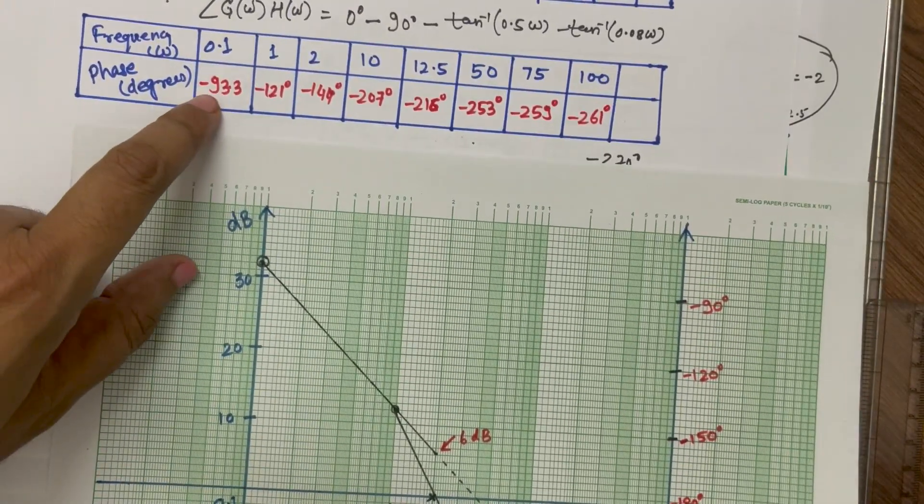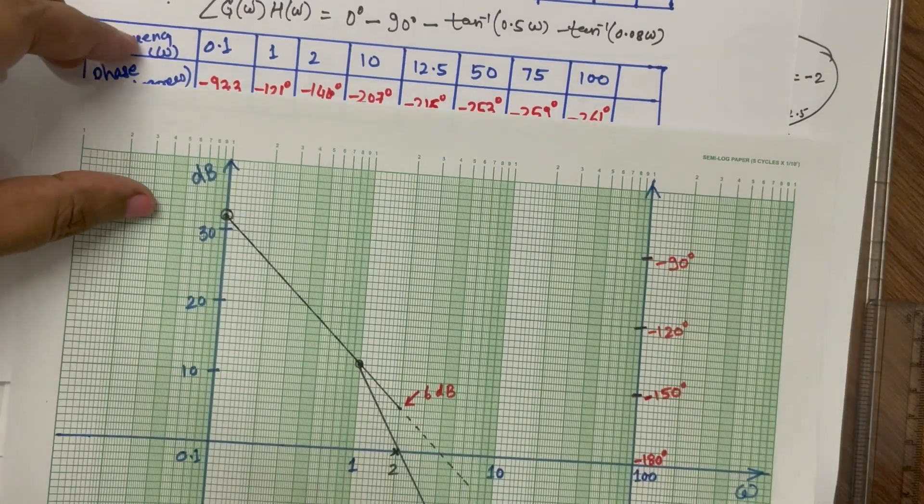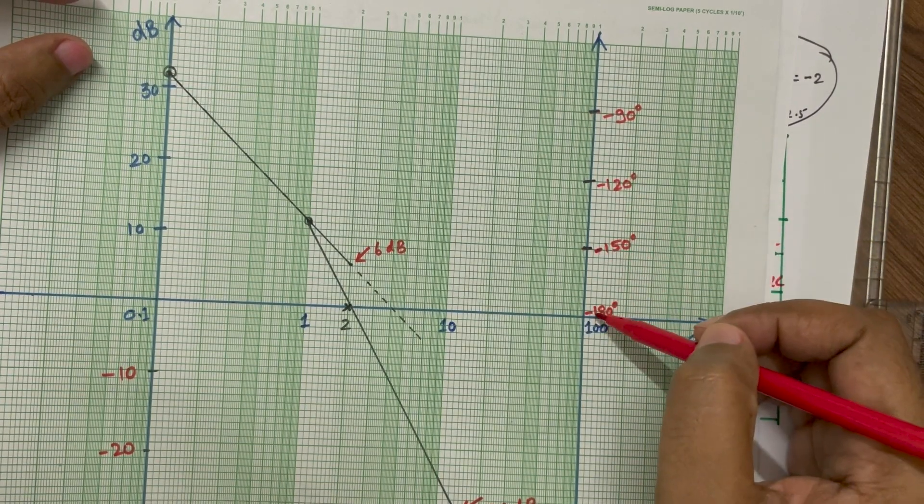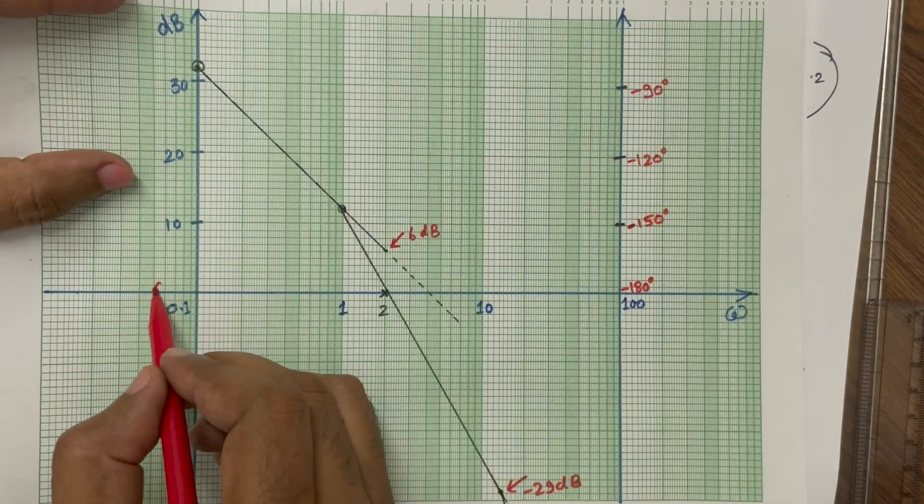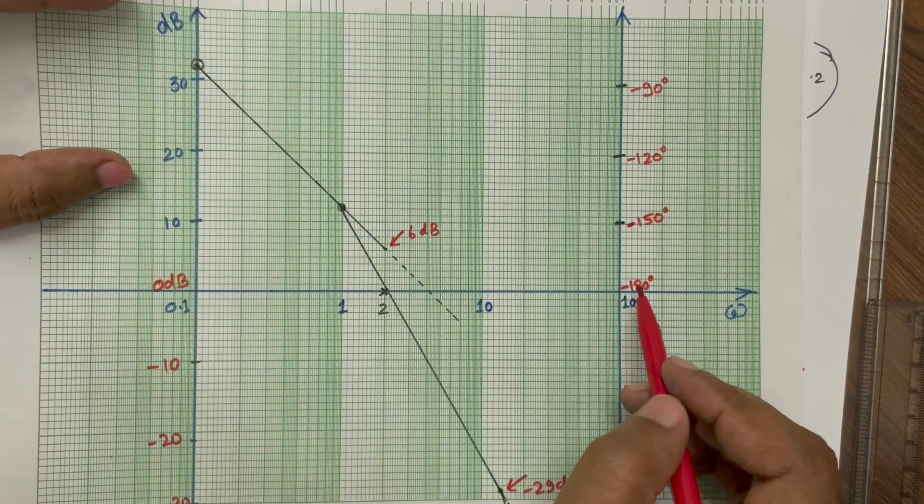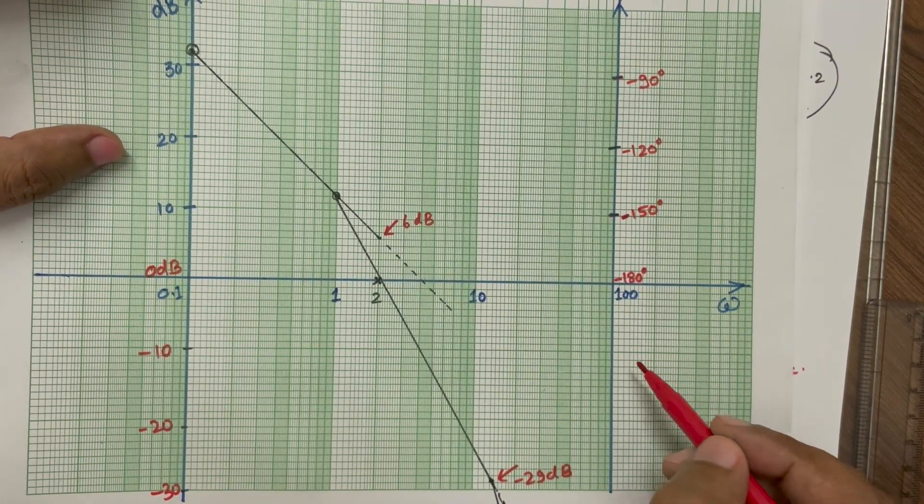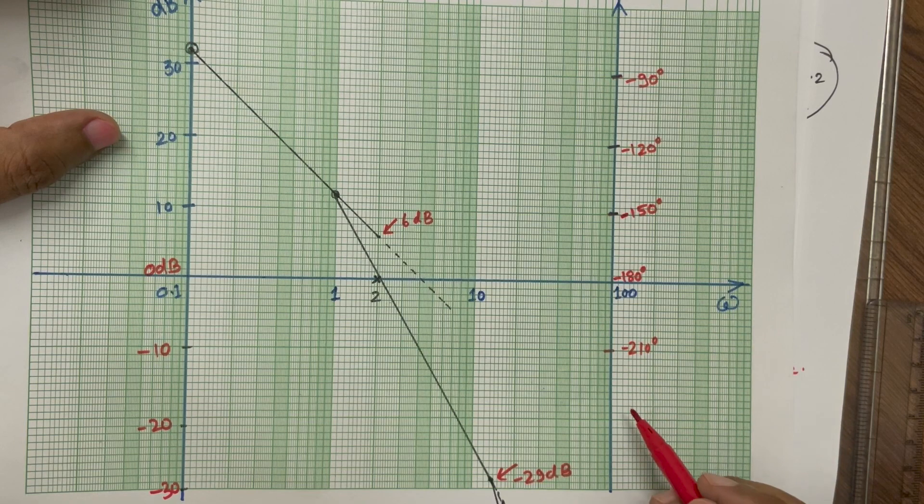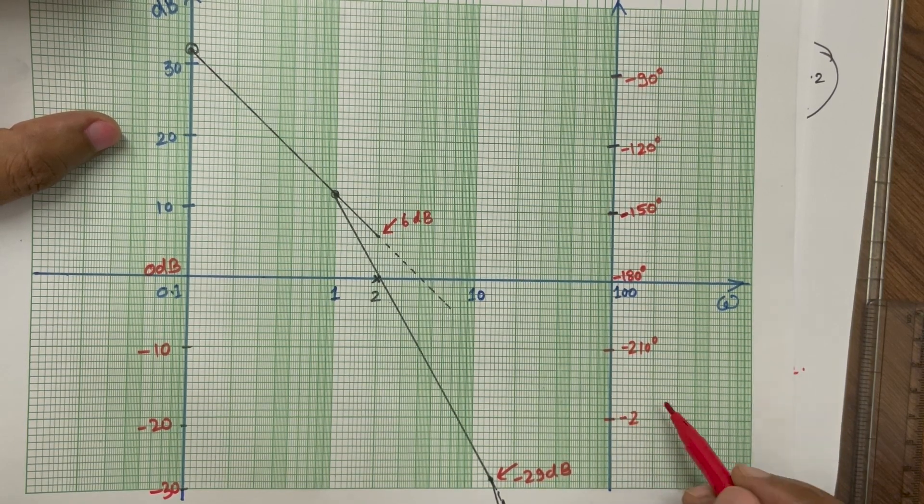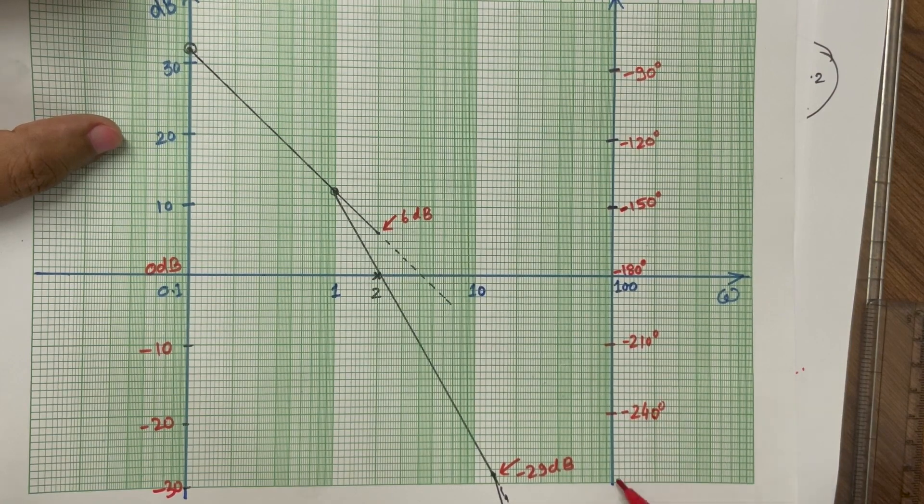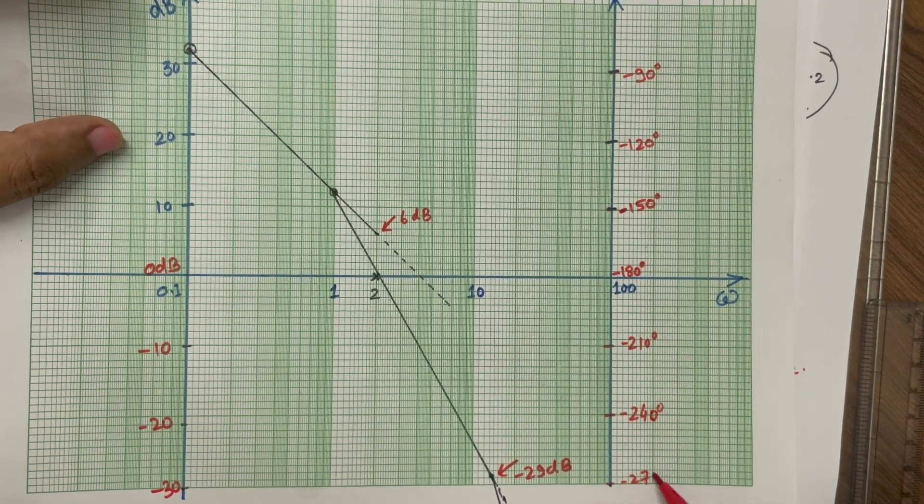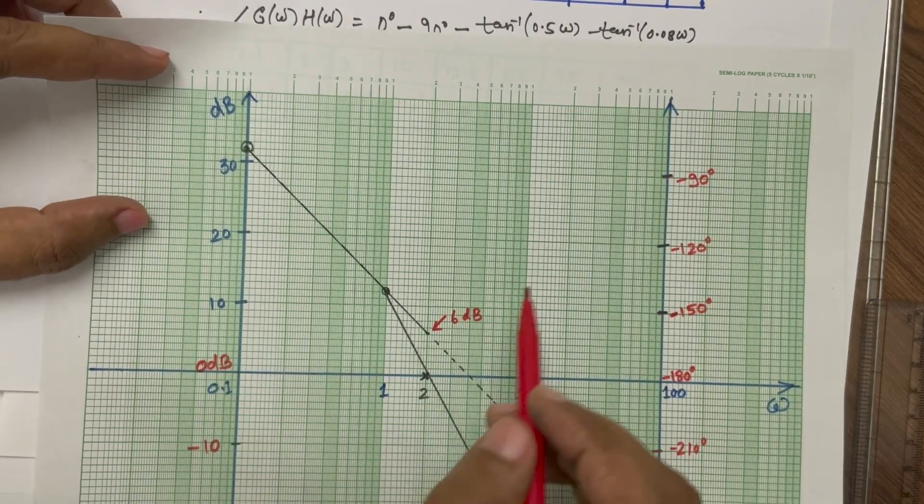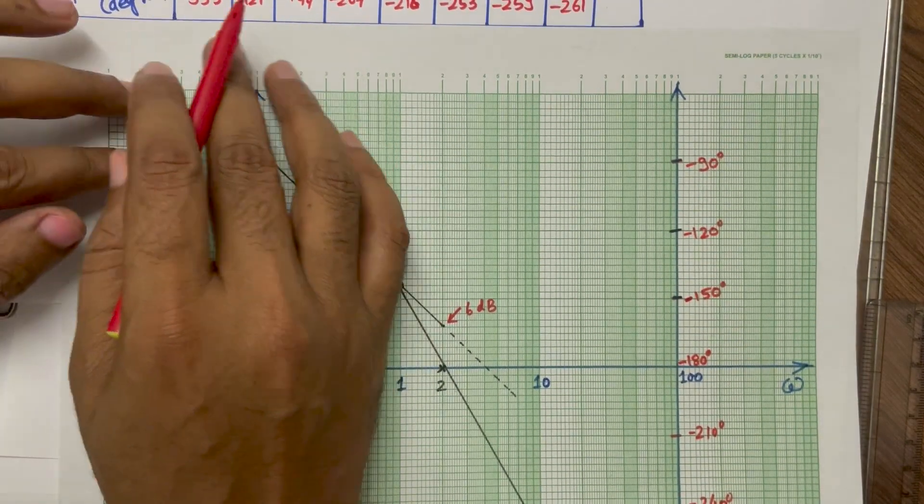For angle plot, at 0.1 it is minus 93 degree. So we have taken angle as minus 90, minus 120, minus 150, minus 180. Always take at 0 dB magnitude, always take minus 180 degree. Similarly, in the other side, we have minus 210 degree, then we have minus 240 degree and then minus 270 degree. So at 0.1, this frequency, the angle is minus 93.3. So this is minus 90, minus 93.3 will be, one step is 3 degrees, so minus 93 degrees here.